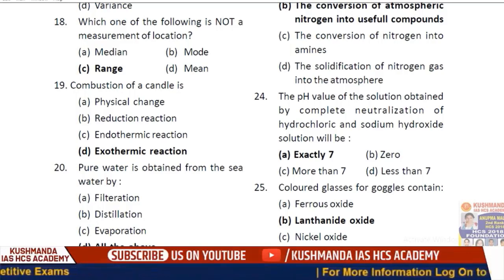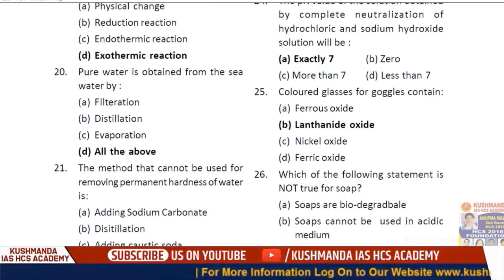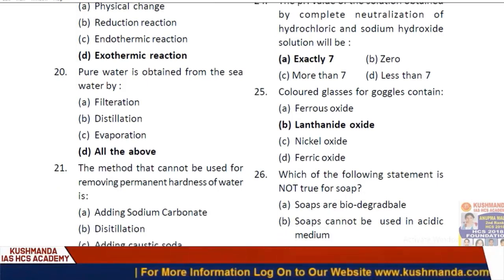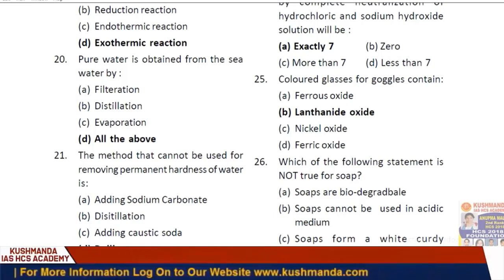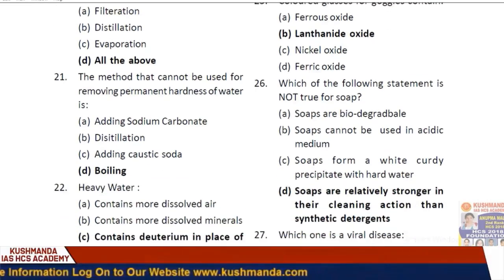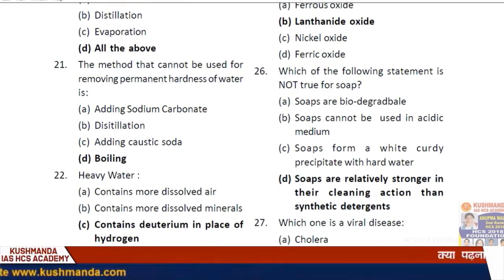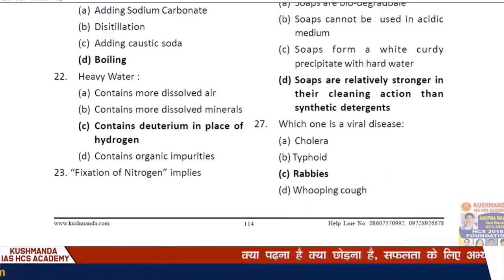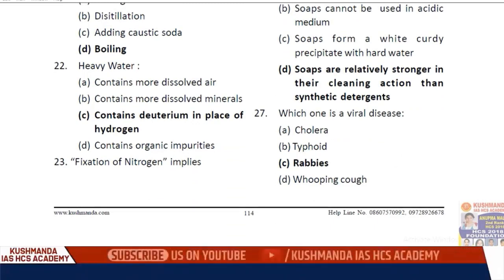Question 19: Combustion of a candle is an exothermic reaction. Question 20: Pure water is obtained from sea water by — option D, all of the above (filtration, distillation, evaporation). Question 21: The method that cannot be used for removing permanent hardness of water is option D — boiling. Question 22: Heavy water contains deuterium in place of hydrogen — option C.